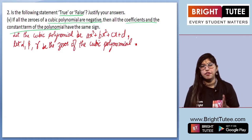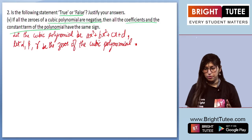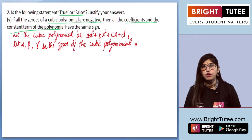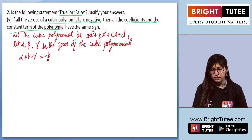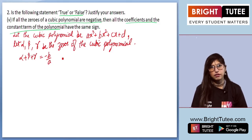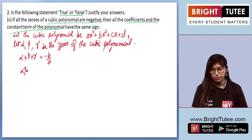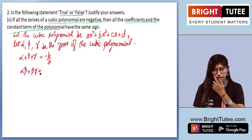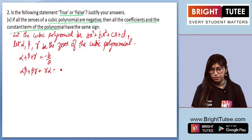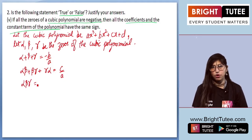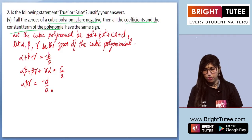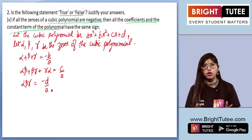Now, if we have a cubic polynomial and alpha, beta and gamma are its zeros, then the sum of the zeros — alpha plus beta plus gamma — equals minus b upon a. Alpha·beta plus beta·gamma plus gamma·alpha equals c upon a, and the product of the zeros, alpha·beta·gamma, equals minus d upon a.